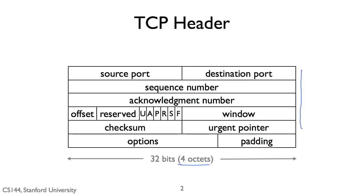The first two fields in TCP are the source port and destination port. Each of these are 16 bits or two octets. So when we talk about connecting to the web on port 80, that's a destination port of 80.